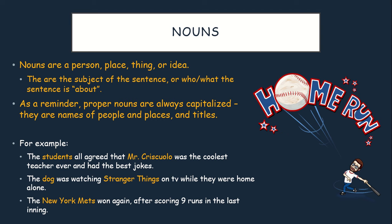For example, let's look at the nouns in these sentences. 'The students all agreed that Mr. Cascolo was the coolest teacher ever and had the best jokes.' The nouns are students and Mr. Cascolo. 'The dog was watching Stranger Things on TV while they were home alone.' Dog is what the sentence is about, and Stranger Things is a proper noun because it's the title of a show. 'The New York Mets won again after scoring nine runs in the last inning.' The New York Mets is the subject, so it's a noun, and because it is a proper noun, it is capitalized.